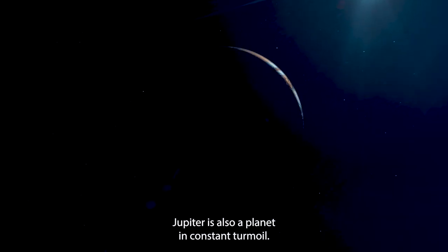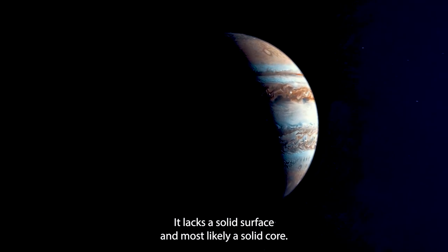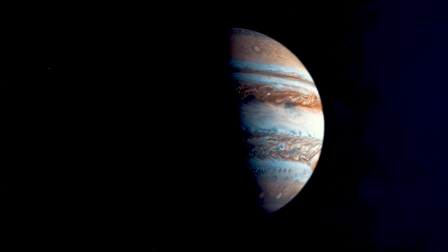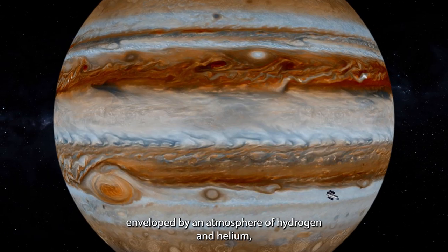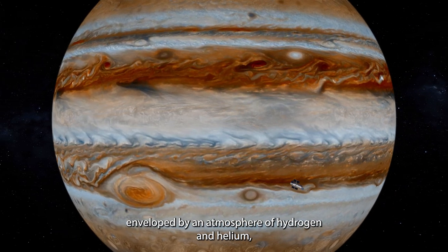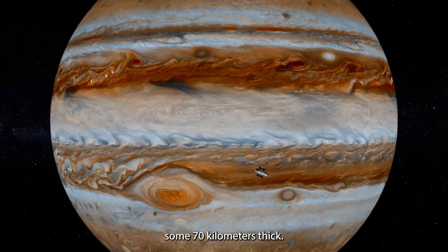Jupiter is also a planet in constant turmoil. It lacks a solid surface and most likely a solid core. The enormous planet is an ocean of liquid hydrogen enveloped by an atmosphere of hydrogen and helium, some 70 kilometers thick.